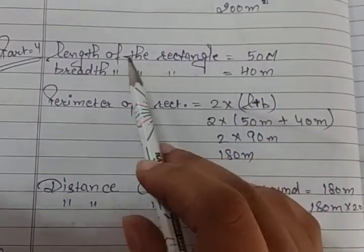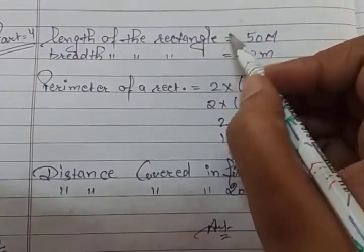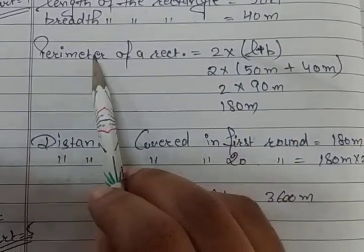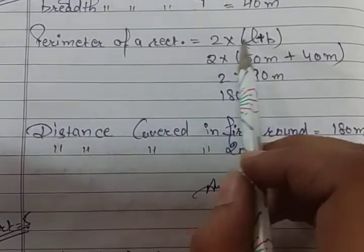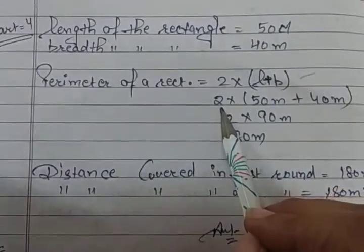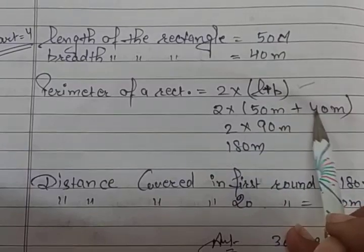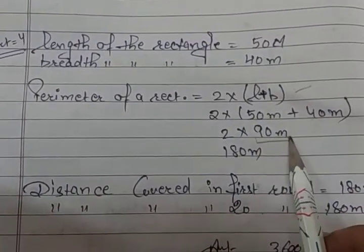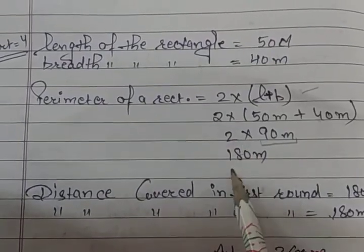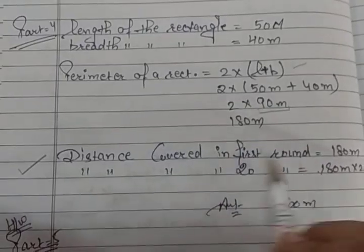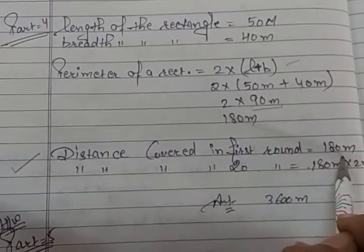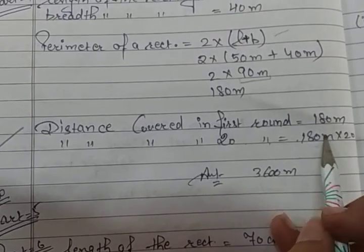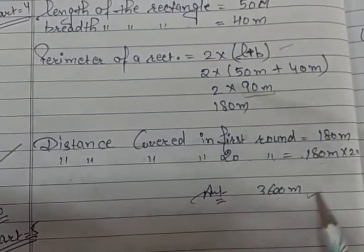The length of the rectangular field is 50 meters and breadth is 40 meters. Perimeter of a rectangle is 2 multiplied by (length plus breadth). Putting in values: 2 multiplied by (50 plus 40) = 2 multiplied by 90 = 180 meters. Distance covered in one round is 180 meters. For 20 rounds, multiply 180 by 20, and you will get the answer: 3600 meters.